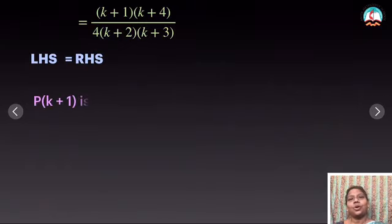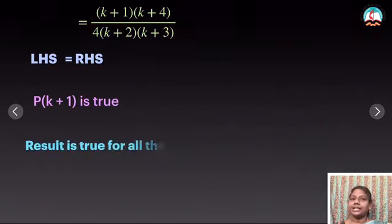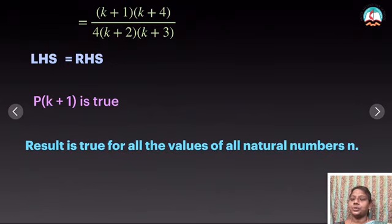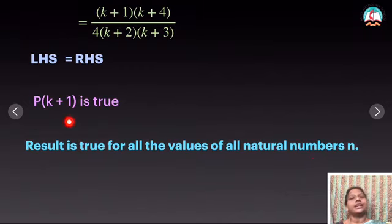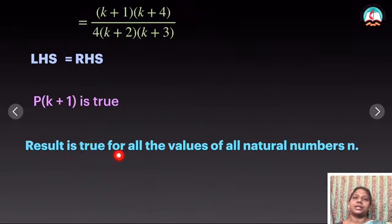So what is the general conclusion? I proved n=1 is true, I assumed n=k is true, and now I proved k+1 is true. Therefore I can say that it is true for all the values of natural numbers n.